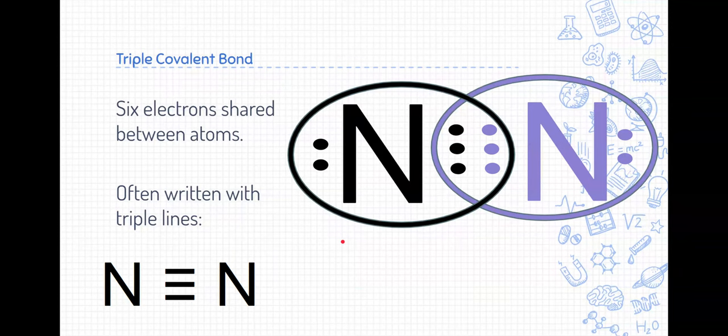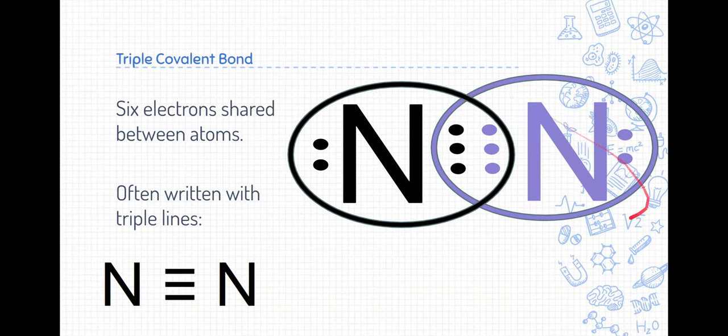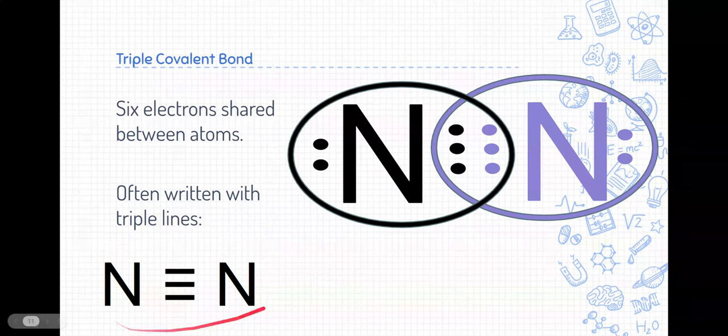All right, we have a single covalent bond, a double covalent bond, and we also have a triple covalent bond. This is where six electrons are shared between atoms. In order for these two nitrogens to bond, they'll share six valence electrons in the middle between the two. And so you can see that here with these double overlapping Venn diagrams. Again, similar to the other two, this is how we would simply write that in textbooks and on paper. This is the simplified form of that.